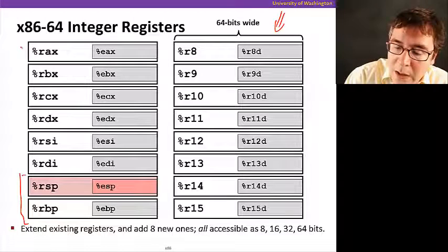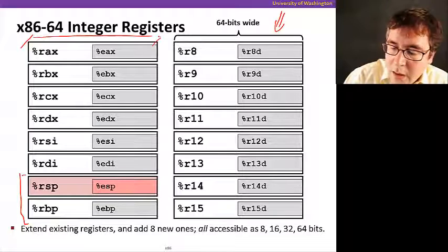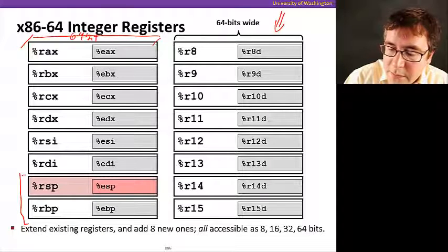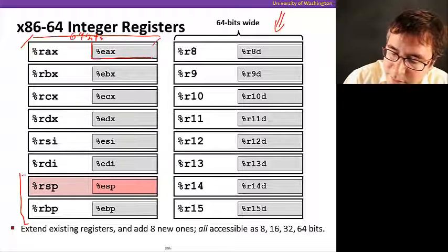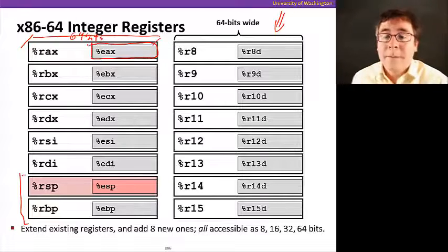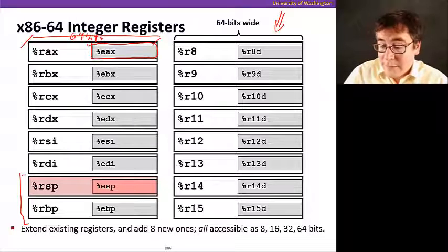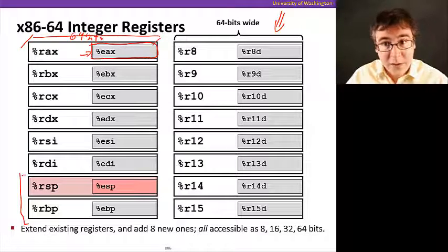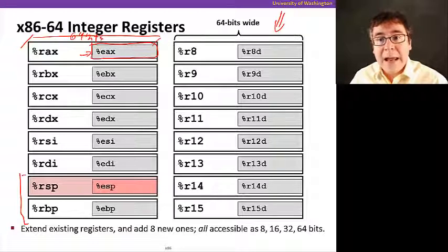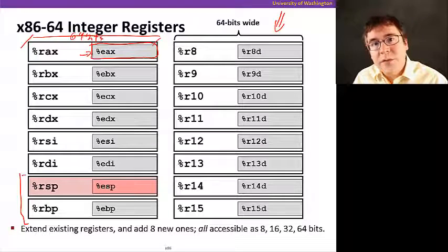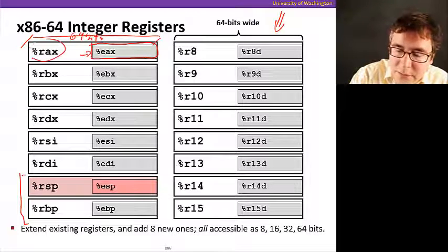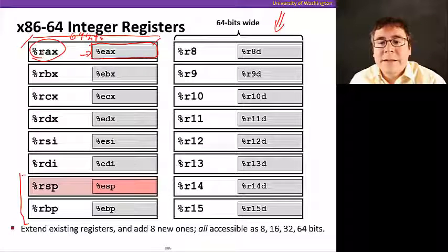And also know that while these registers are 64 bits wide, you can also access the lower 32 bits of them as a register as well. For example, EAX, which is also present in IA32, is the low order 32 bits of register RAX in x86-64.